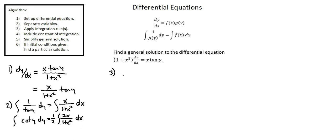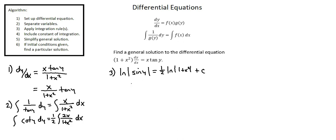Step 3: apply integration rules. The integral of cotangent y — found in the formula book if needed — is the natural log of the absolute value of sine y. This equals 1 half times the integral of 2x over 1 plus x squared, which is a derivative over its function, giving the natural log of the absolute value of 1 plus x squared, plus the constant of integration c.